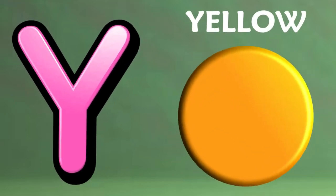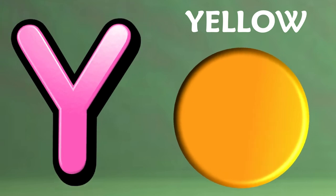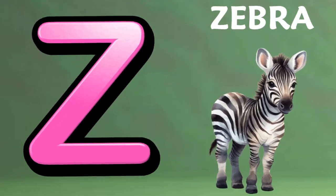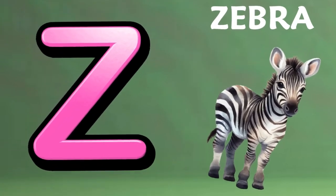Y is for yellow, ye-ye-yellow. Z is for zebra, z-z-zebra.